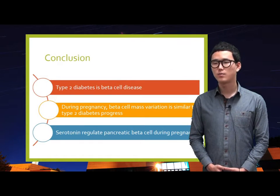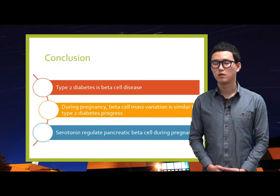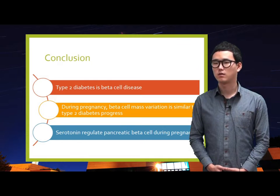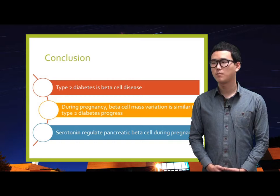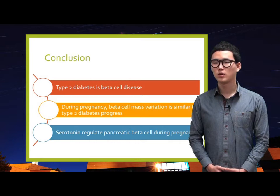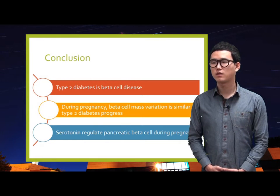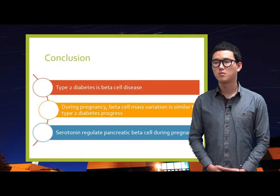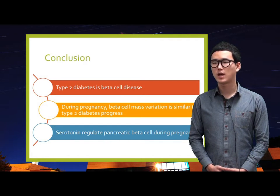Finally, I will briefly summarize this presentation with three points. First, Type 2 diabetes is a beta cell disease. Second, during pregnancy, beta cell mass variation is similar to Type 2 diabetes progression. Finally, serotonin regulates pancreatic beta cells during pregnancy. I hope that this presentation has helped your understanding of Type 2 diabetes. Thank you for listening.